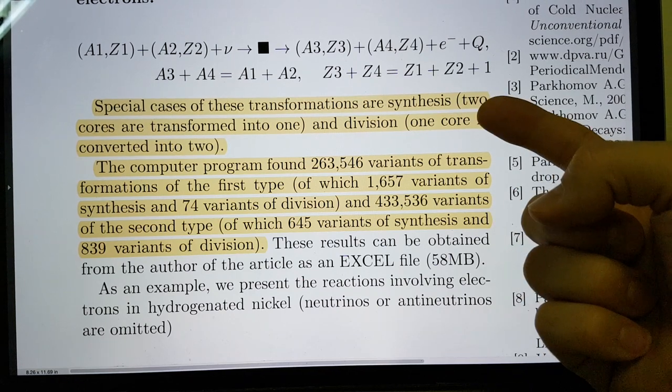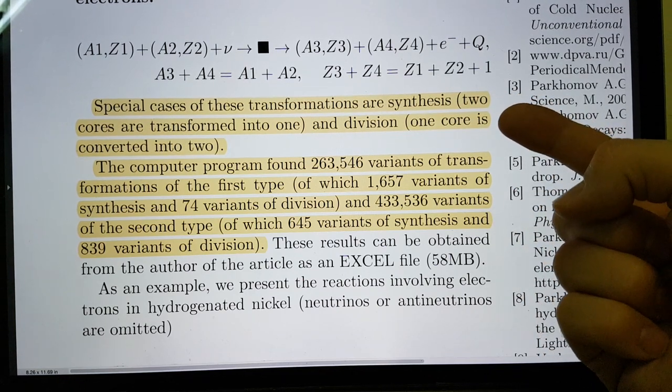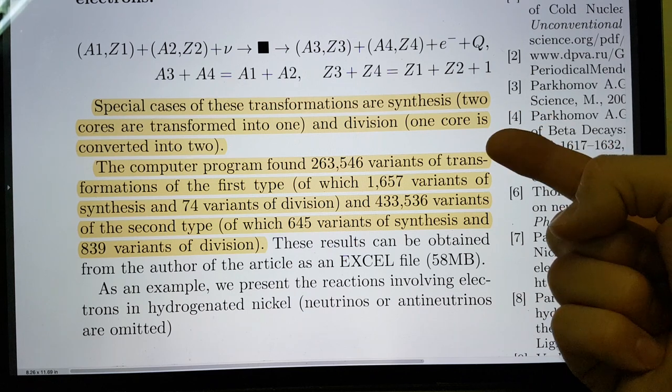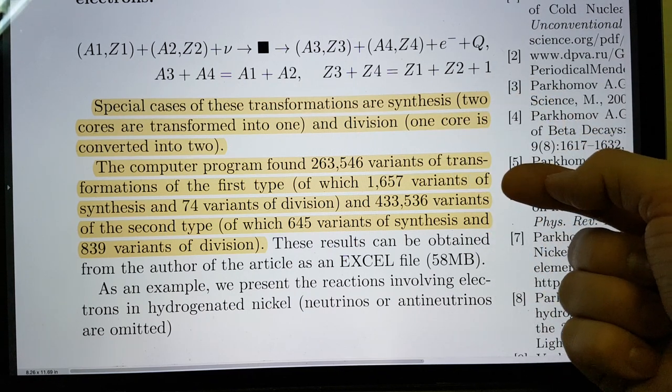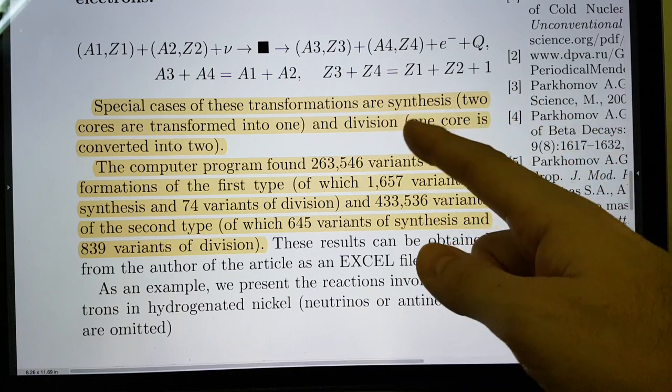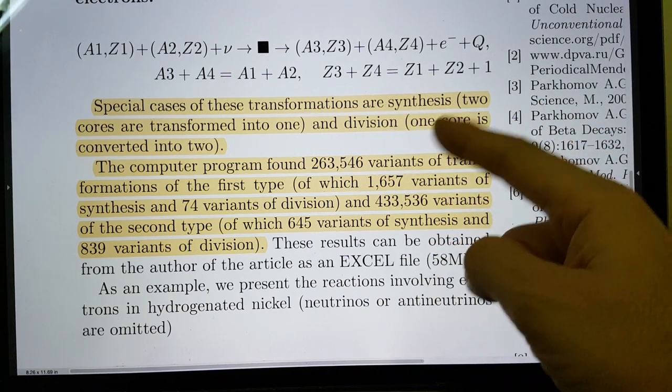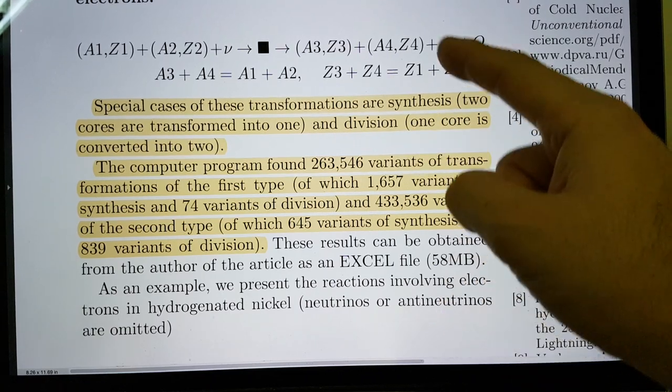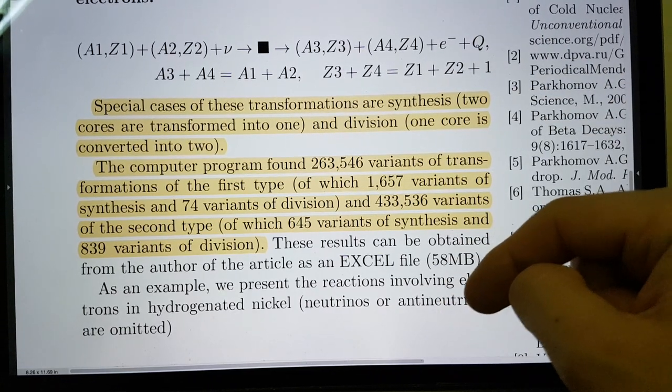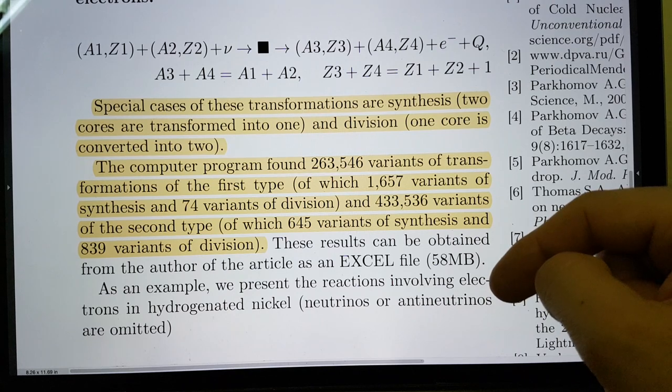In addition, he's done what he did for the first sort of fuzz-fuzz stuff where you have the fusion reactions and fission reactions. He's saying special cases of these transformations are synthesis - two cores are transformed into one - we might call that fusion. And division - one core is converted into two. This is fission, effectively. But this is more accurate to say synthesis and division in this case because it's not really fusion and fission directly because you've got the interactions of electrons and neutrinos and antineutrinos.